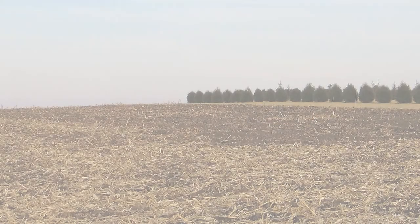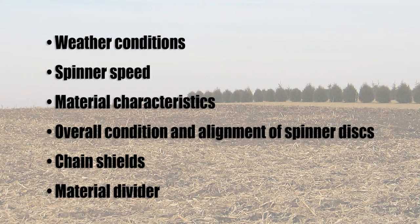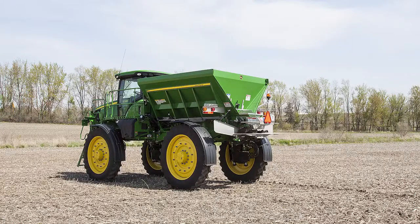Spread patterns can be affected by many factors including weather conditions, spinner speed, material characteristics, and overall condition and alignment of spinner discs, chain shields, and material divider. The spreader must be in good mechanical condition and properly adjusted before testing.